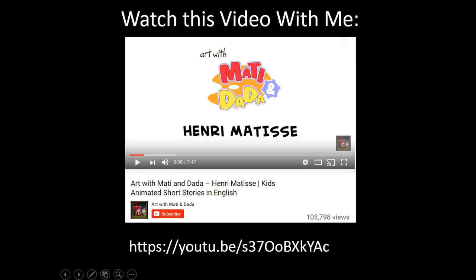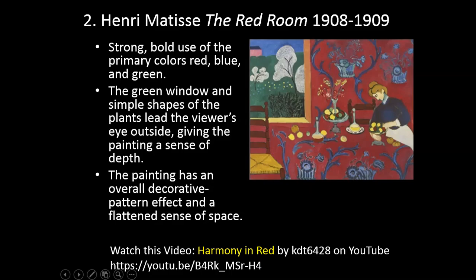Question number two — our second image is also by Henri Matisse, called The Red Room, painted from 1908 to 1909. Notice the strong, bold use of primary colors: red, blue, and green. The green window and simple shapes of the plants lead the viewer's eye outside, giving the painting a sense of depth. The painting has an overall decorative pattern effect and a flattened sense of space. If you'd like to learn more, watch the video Harmony in Red.